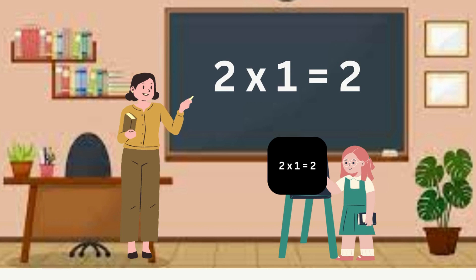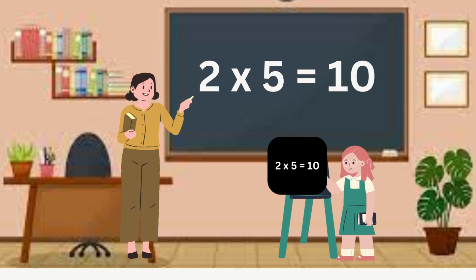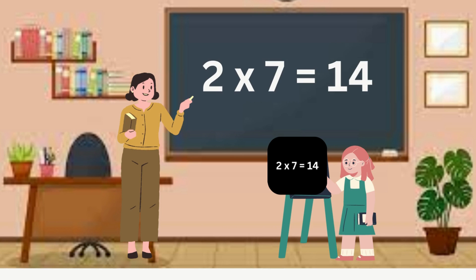Two. Two ones are two. Two twos are four. Two threes are six. Two fours are eight. Two fives are ten. Two sixes are twelve.